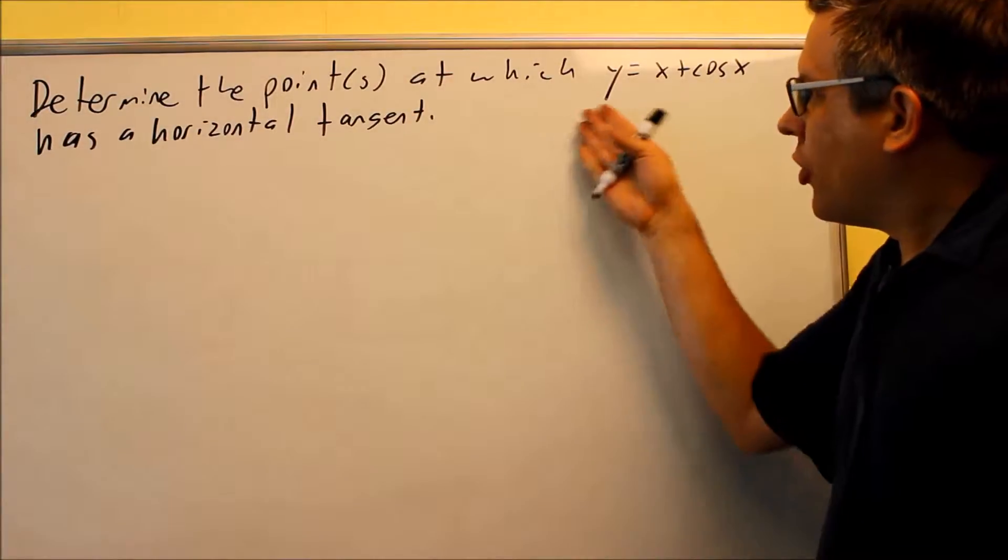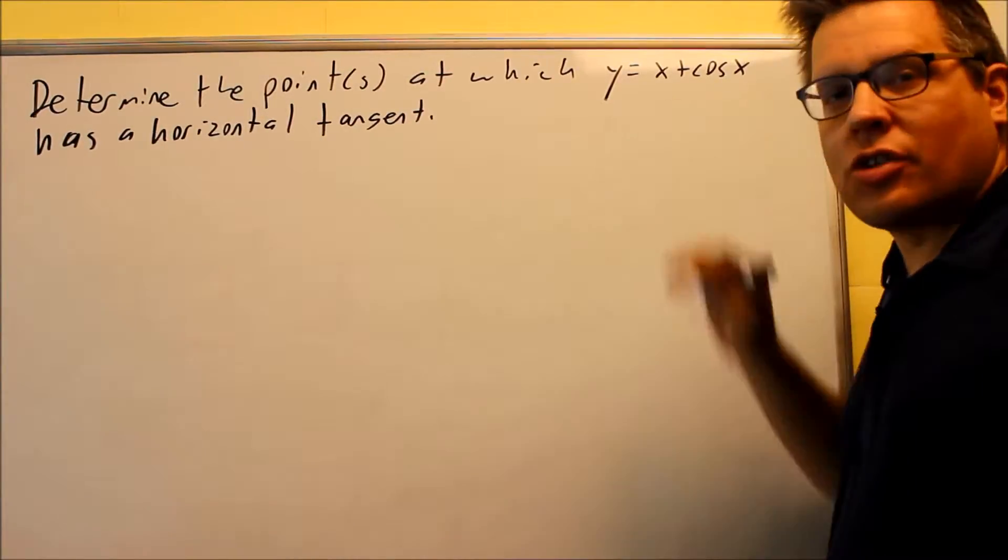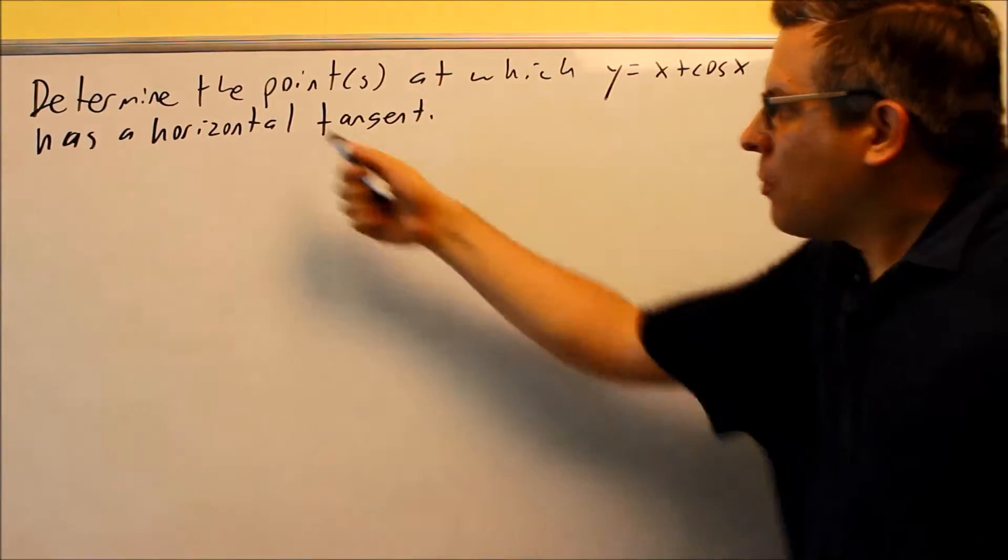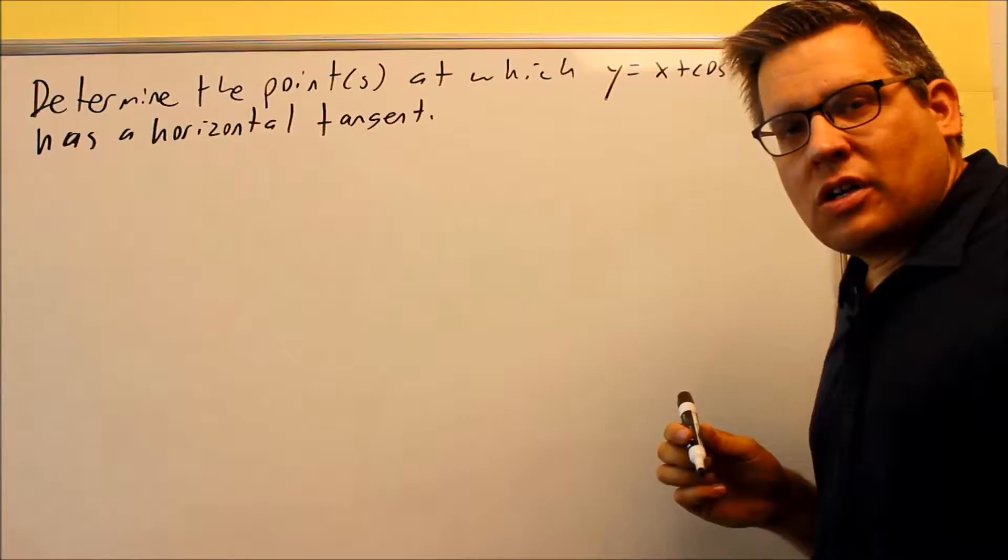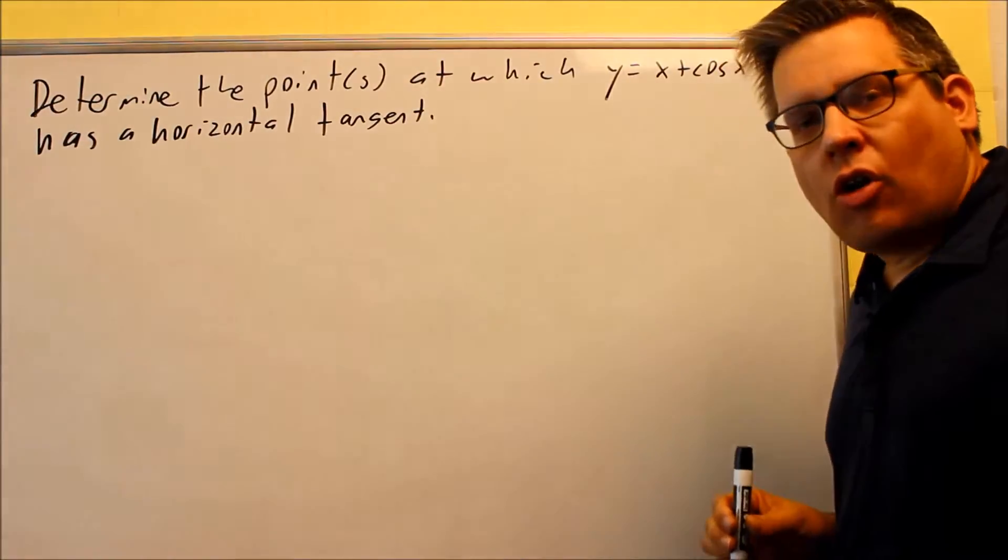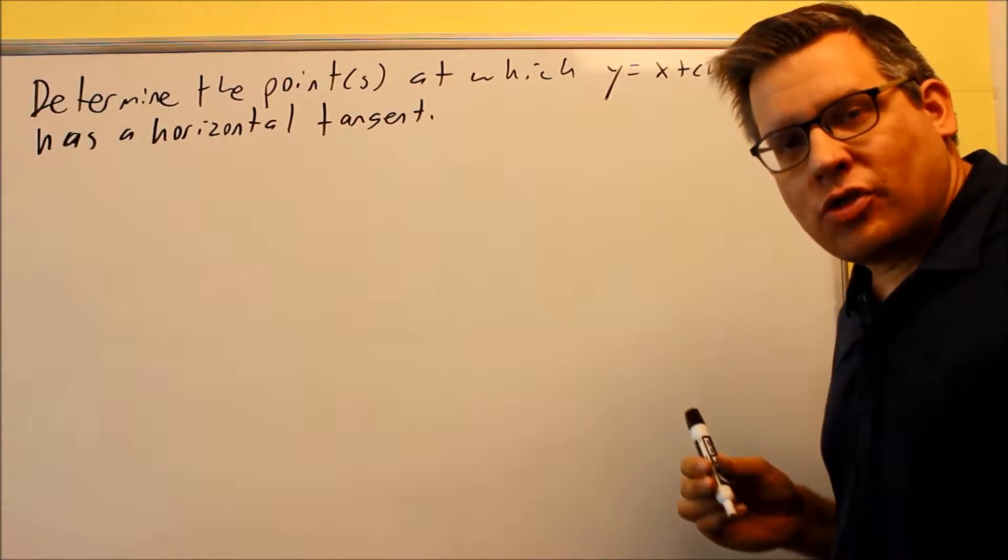On this problem we want to determine the point or points at which this function has a horizontal tangent. What does that mean? A horizontal tangent is the slope at a certain point, and we want the slope to be horizontal, which means it has a slope of zero.